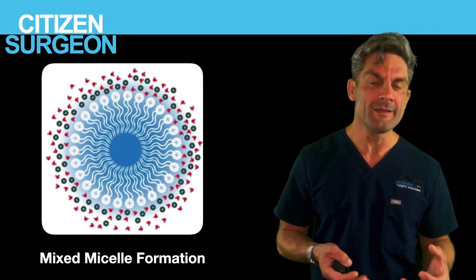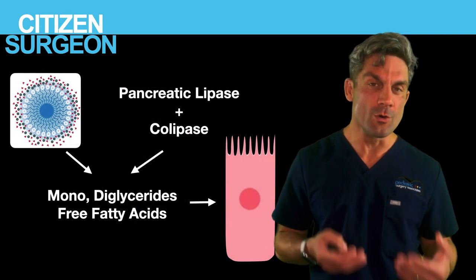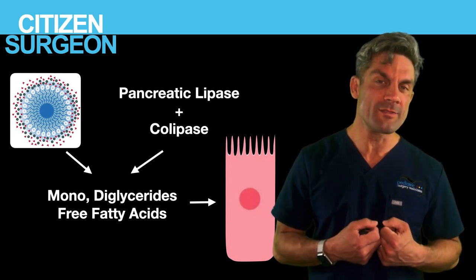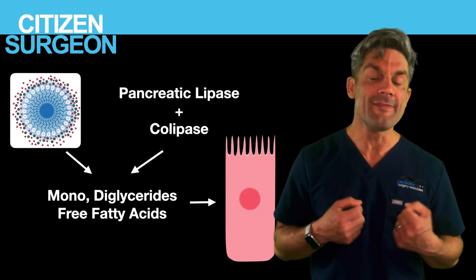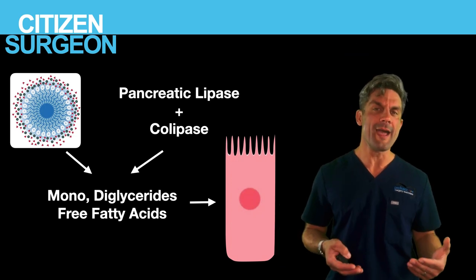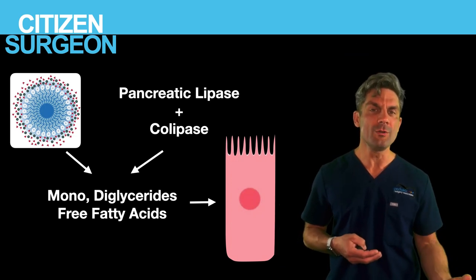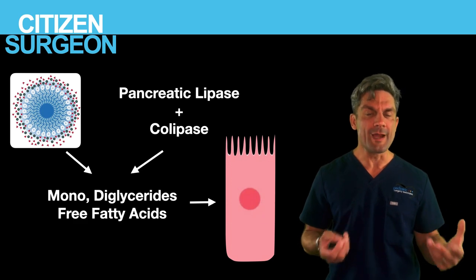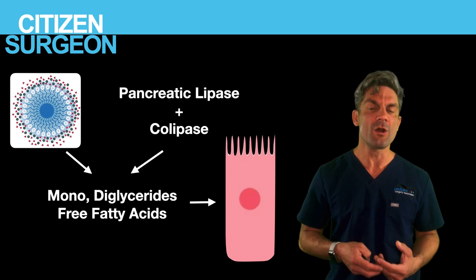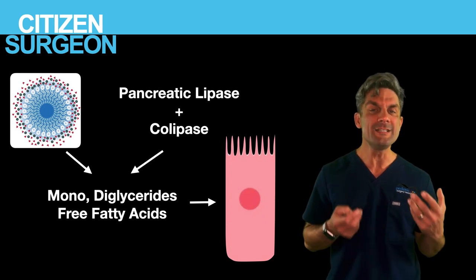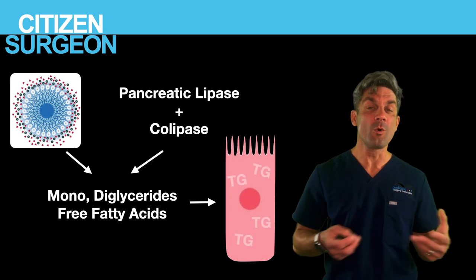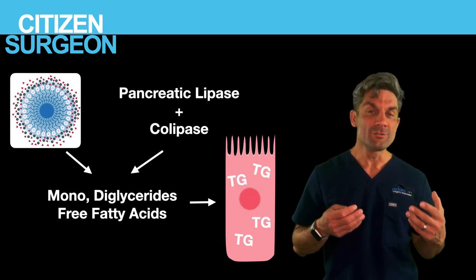We digest or break down those mixed micelles using pancreatic lipase and colipase. Pancreatic lipase must bind with colipase to be activated, and together they break down triglycerides into monoglycerides, diglycerides, and free fatty acids. Those diffuse into the intestinal enterocyte, where they are reincorporated back into triglycerides.